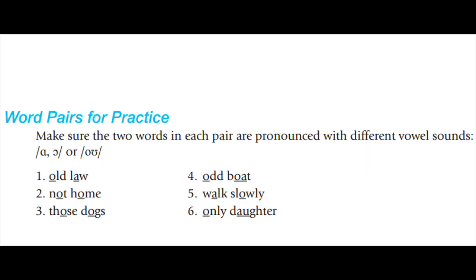Word combinations for AW and OW — make sure that the two words are pronounced with different vowel sounds: old law, not home, those dogs, odd boat, walk slowly, only daughter.